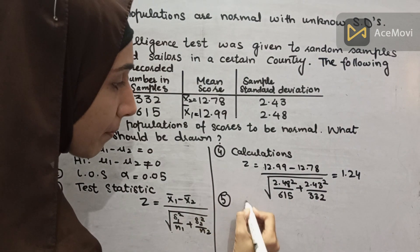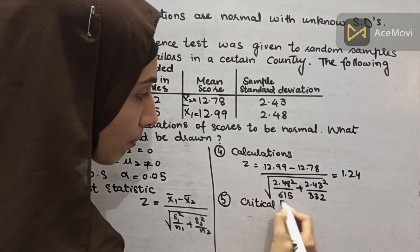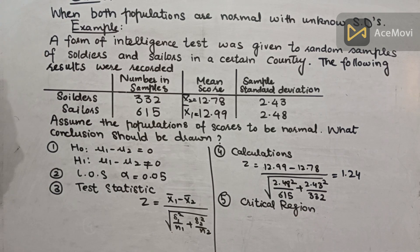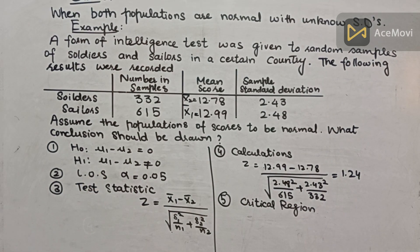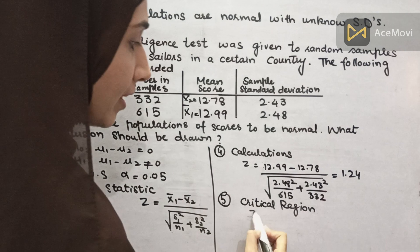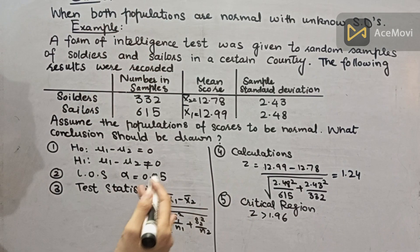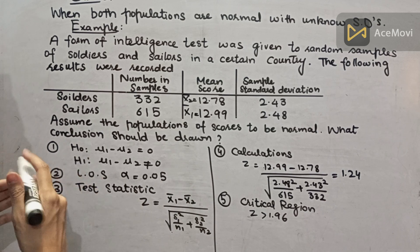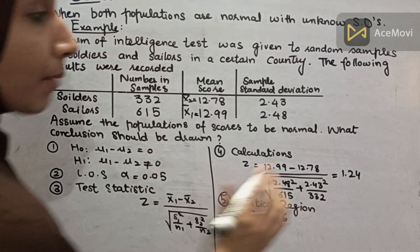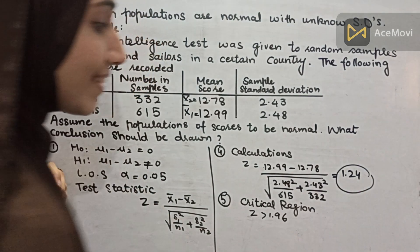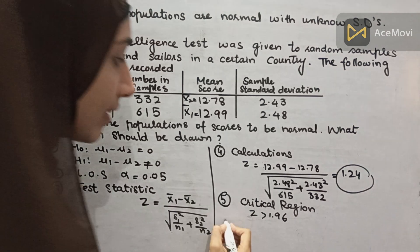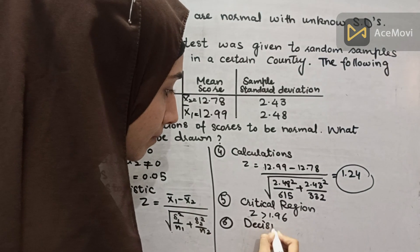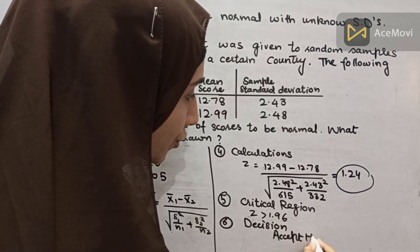Step 5 — Critical region: we have a two-sided test with alpha equals 0.05, so the critical region is z greater than 1.96. Our z value is 1.24, which is not greater than 1.96, so we do not fall in the critical region. Therefore, we accept H0.